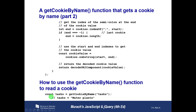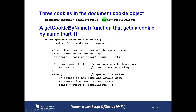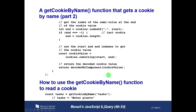When getCookieByName is called with 'tasks', it finds the starting position of 'tasks', moves past the equal sign to 'w', finds there's no semicolon after it so uses the end of the string, and pulls out 'water%20plants'. Then decodeURIComponent converts that percent-20 back into a space, and tasks ultimately gets set to 'water plants'.